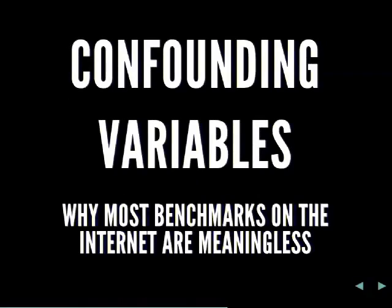I want to talk about the idea of confounding variables. If anyone saw that blog post by Zed Shaw — probably about six months ago — 'Programmers Need to Learn Statistics or I Will Kill Them' — it's worth Googling, and he touches on this a lot. It's a huge problem that people don't understand the idea of confounding variables affecting your benchmarks. Any other piece of that stack that you're measuring — that's not the thing you're supposed to be measuring — is potentially a confounding variable.